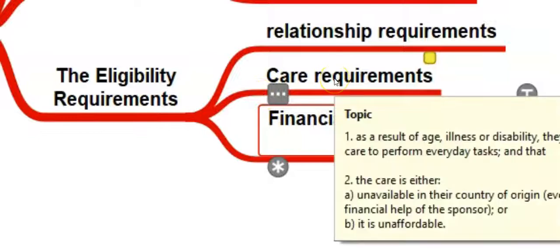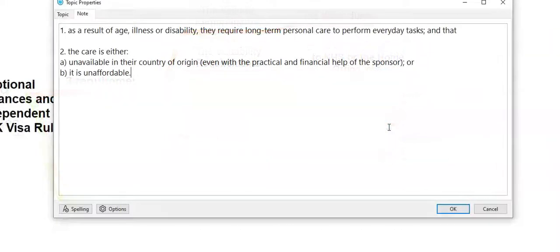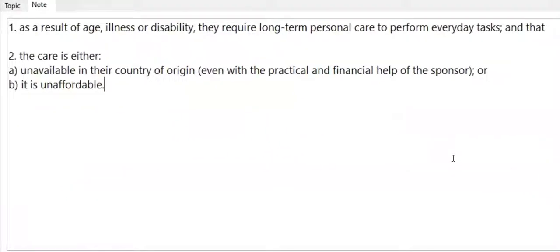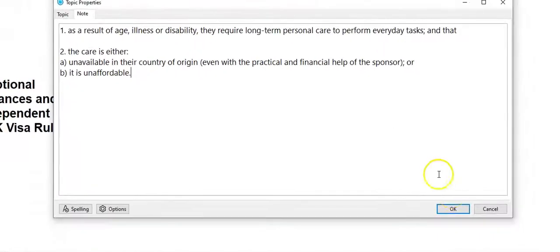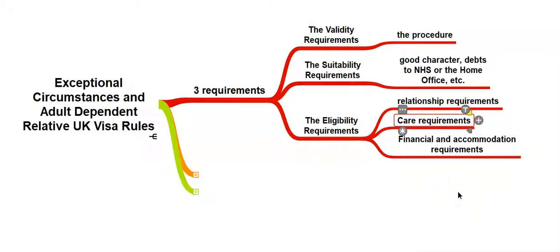Most refusals unfortunately happen because adult dependent relatives cannot show that they meet the care requirements. In other words, they have difficulty showing that as a result of age, illness or disability they require long-term personal care to perform everyday tasks, and that the care is either unavailable in their country of origin even with the practical and financial help of the sponsor, or it is simply unaffordable. But even if you have difficulty meeting one of the requirements — especially the care requirements — the decision makers cannot just refuse the application straight away. They have a legal obligation to take some steps.